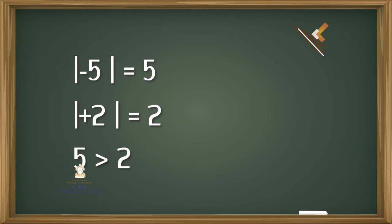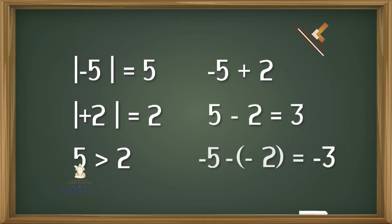El signo correspondiente a ese número lo colocamos en la respuesta. Como el valor absoluto de negativo 5 es mayor, el signo que colocamos es el signo negativo. Por lo tanto, la respuesta final a la diferencia es de negativo 3.